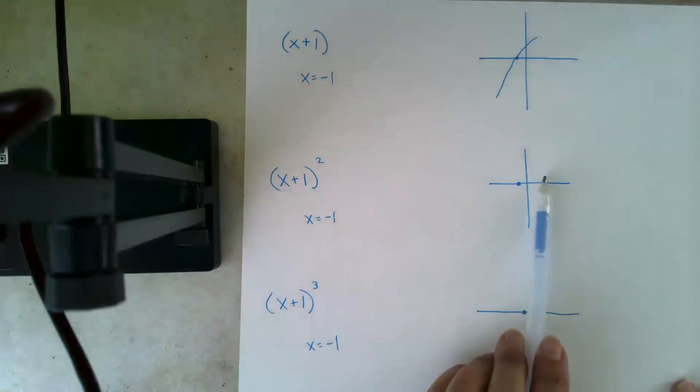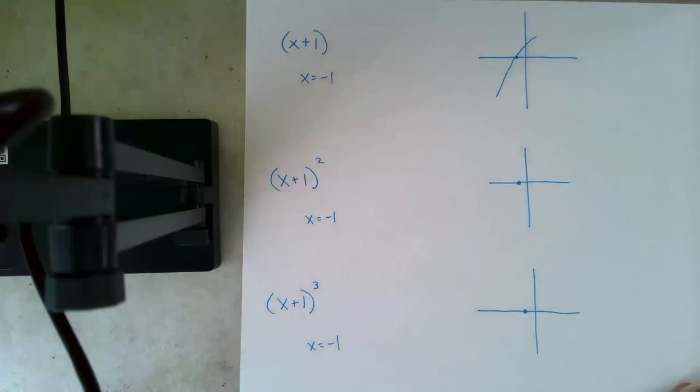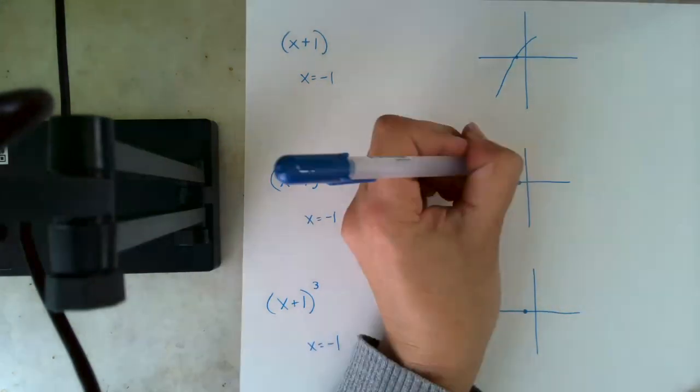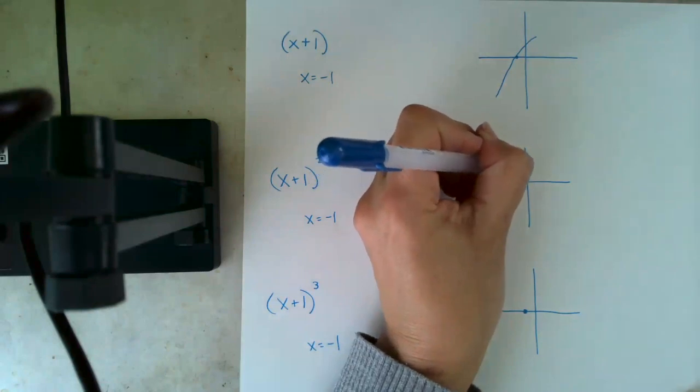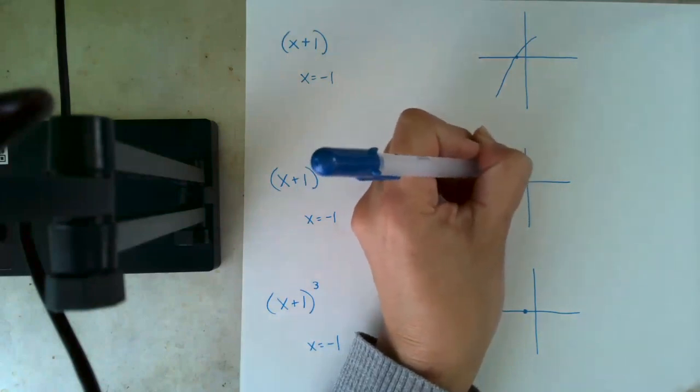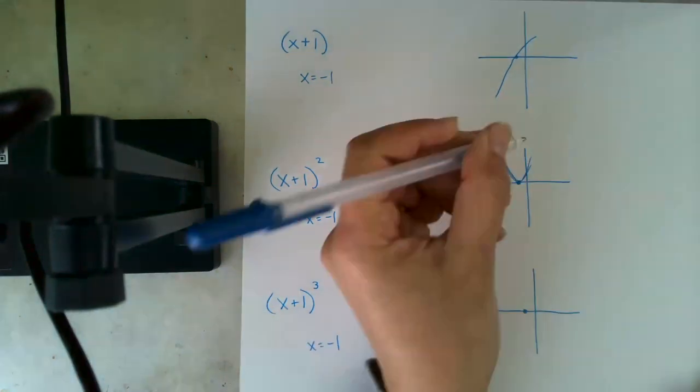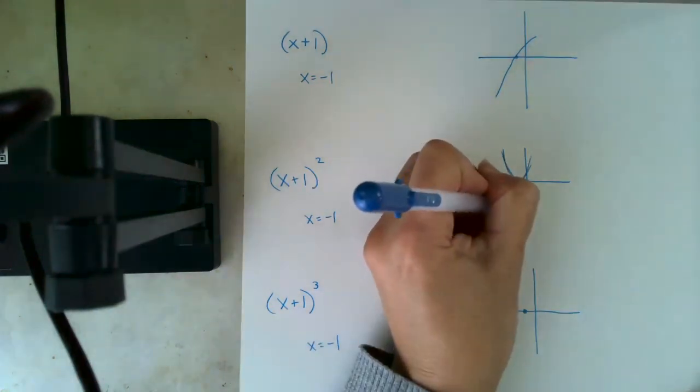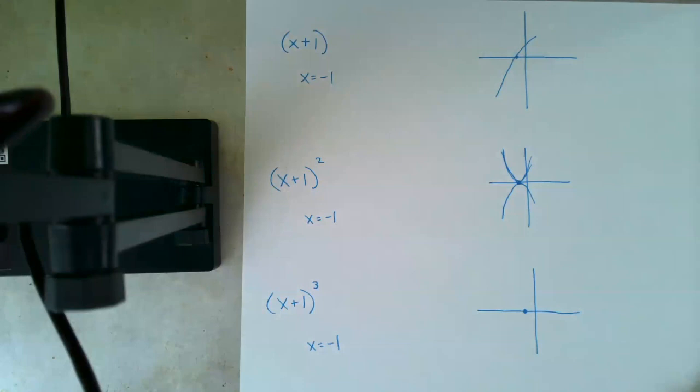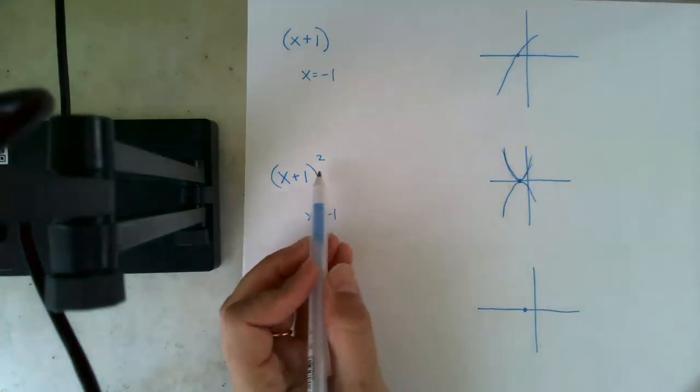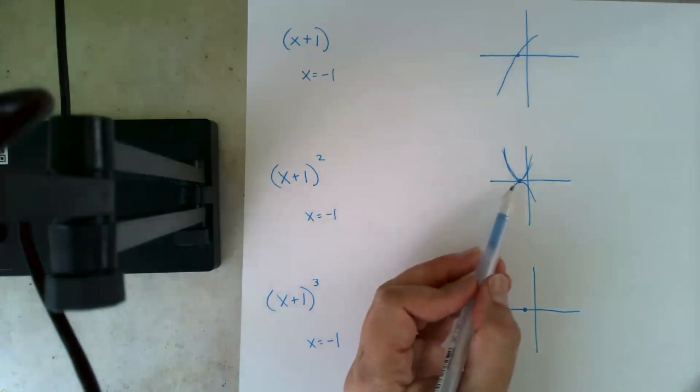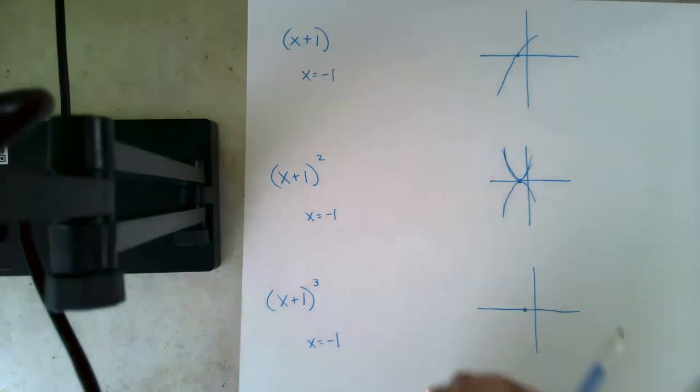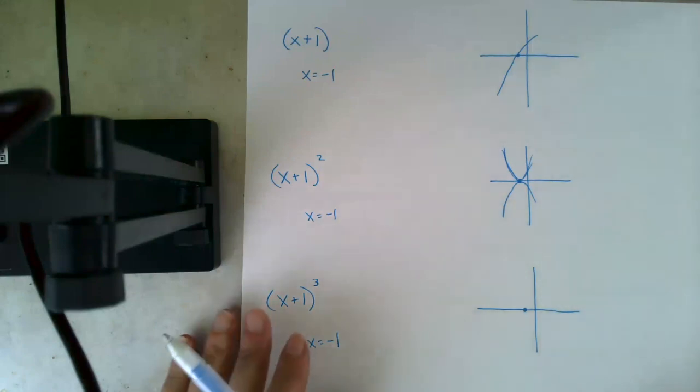On either side of your zero, you will have the same sign. You will do what is called bouncing. So either you will approach this zero and then bounce right back up, or you will be approaching this zero and then bounce right back down. So at an even multiplicity, you bounce. You have the same sign on one side and the other side of your zero.